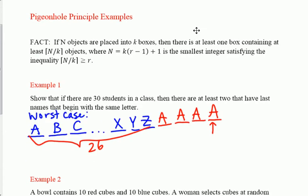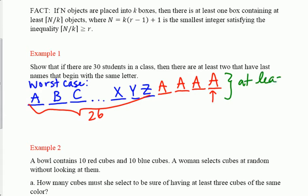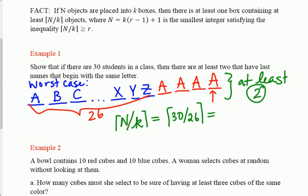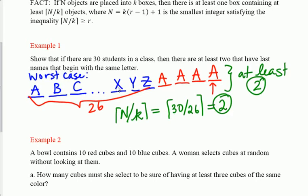This is a common-sense question most students can answer pretty quickly. If you wanted to use the formula, I'm going to take the ceiling of N objects (in this case the students) divided by K boxes (the boxes represent different letters that begin the last name). There were 30 students in the class, 26 possible letters, so 30 divided by 26 is one point something. Take the ceiling and you get two.